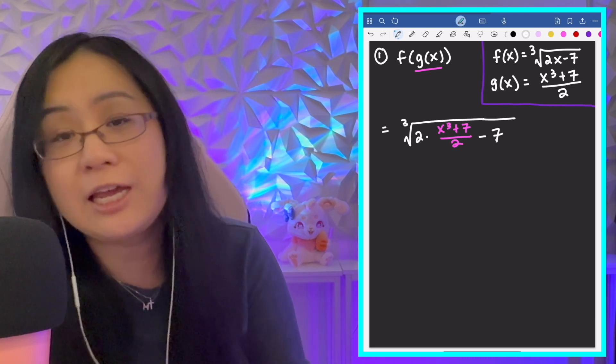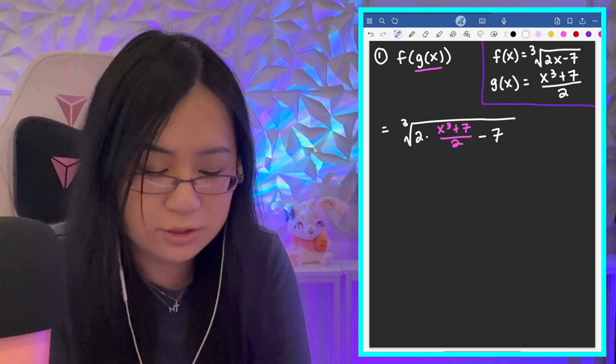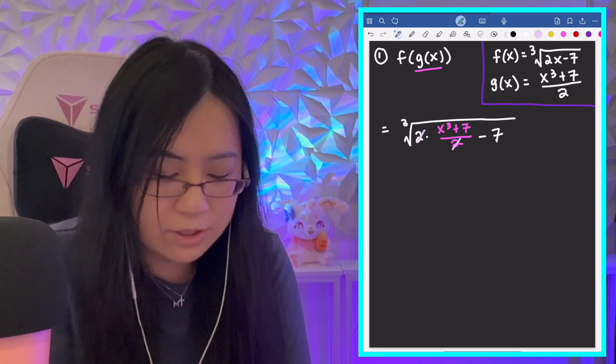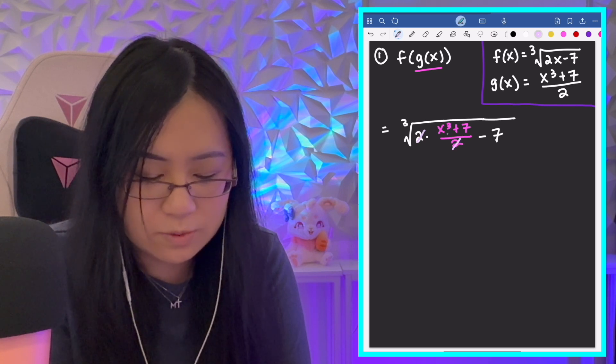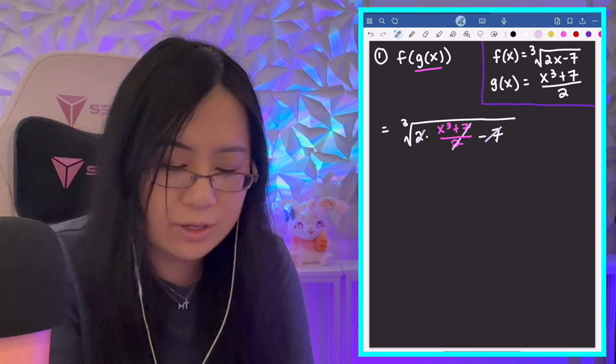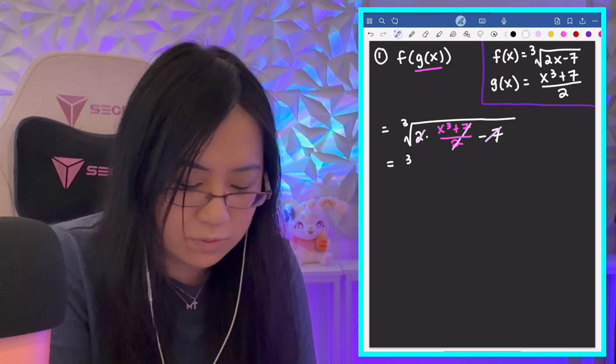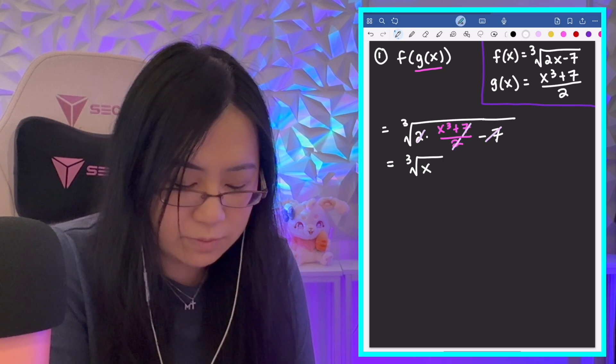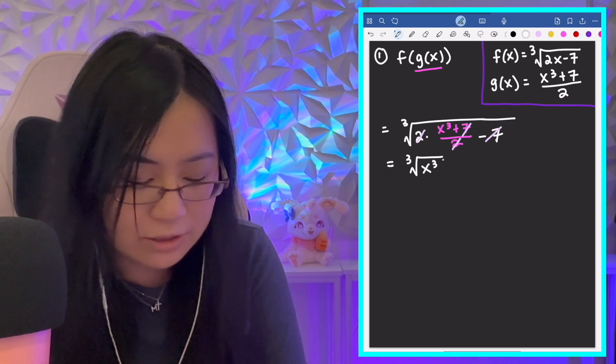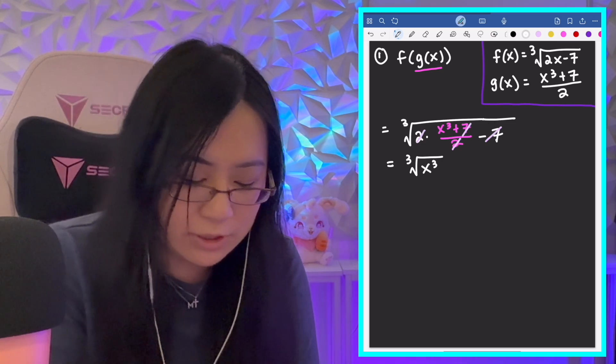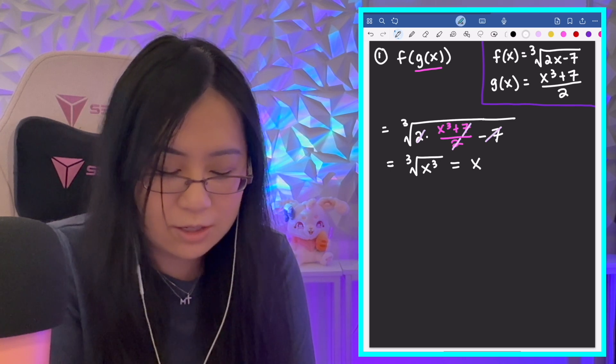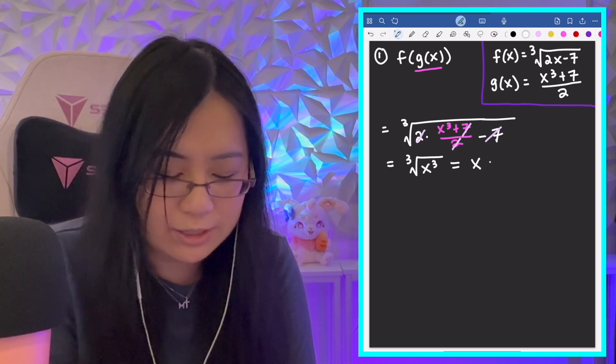And now, it's just simplifying algebraically, so you can just take your time with this step by step. But here, we have the 2s that cancel out. So, we have the cube root of x cubed plus 7 minus 7, so then the 7s cancel out. And you're left with the cube root of x cubed. And because this is an odd exponent and a cube root here, we have no problems with absolute values or anything. They undo each other, and we do get x indeed.